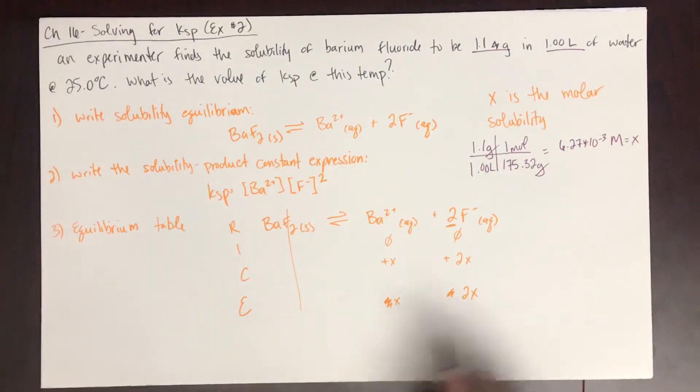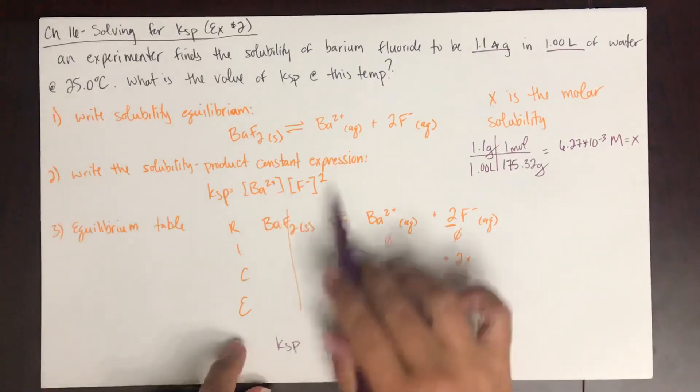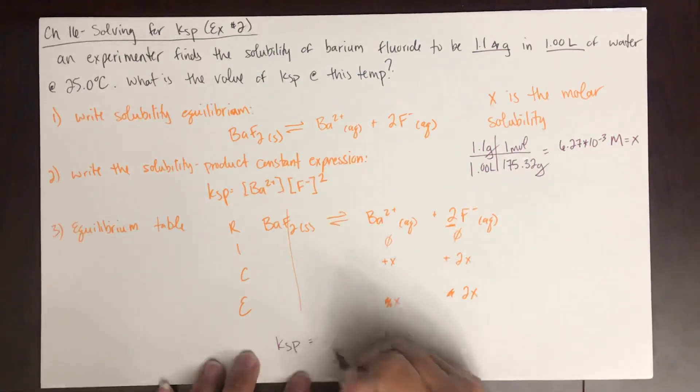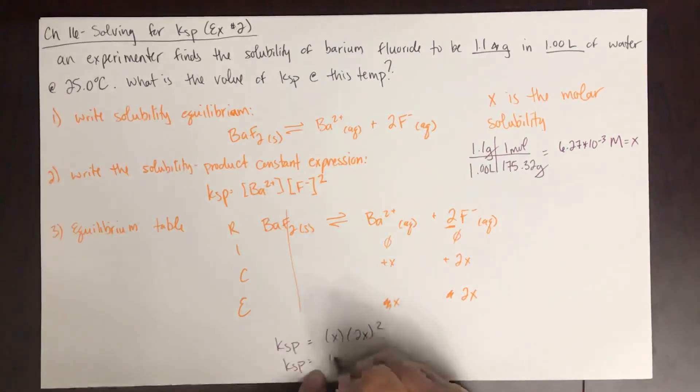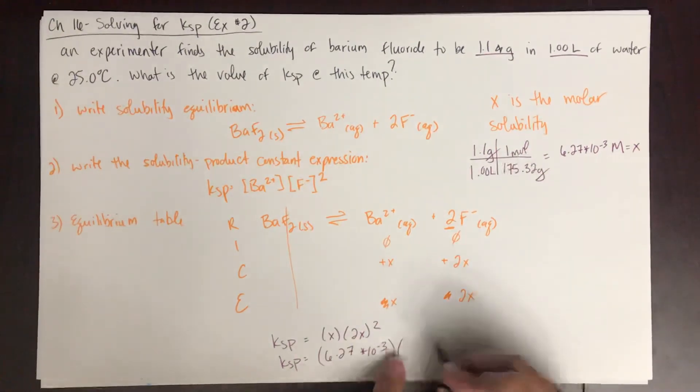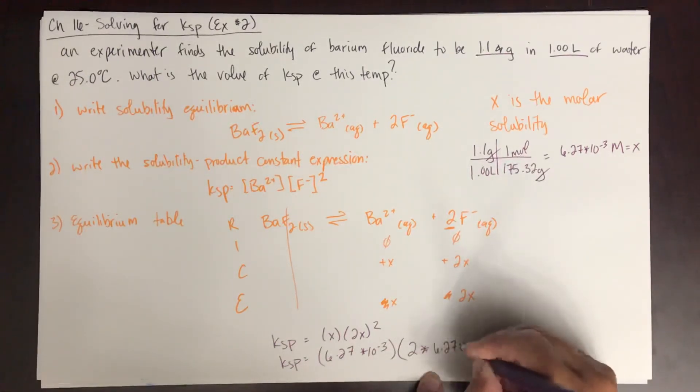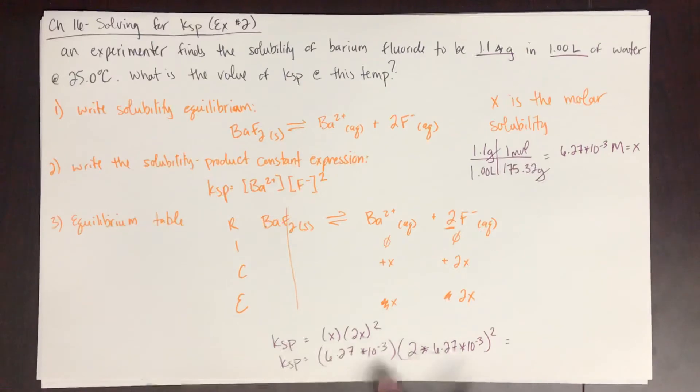KSP is essentially X times 2X squared. But you could also write 6.27 times 10 to the negative 3 times 2 times 6.27 times 10 to the negative 3 squared. That's going to give you your KSP. Either of these are the same. I just wrote it out here so you can see me plugging in X both places.